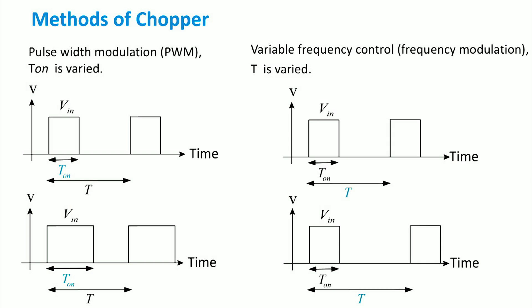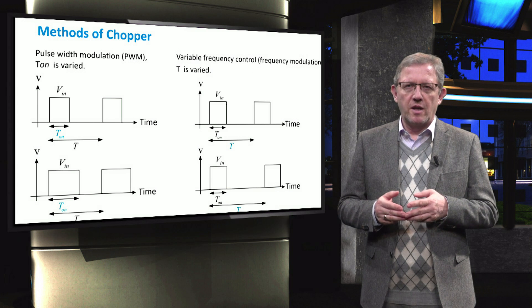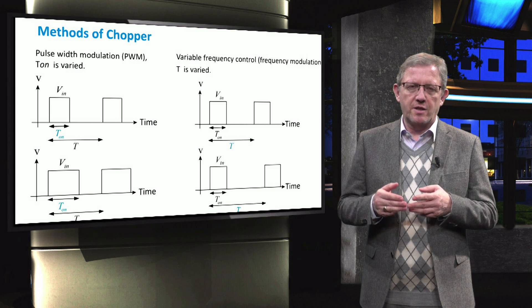In the frequency modulation method, unlike the PWM modulation method, the on time of the switch remains constant and the total period changes. This method is used when the variable switching frequency is needed.